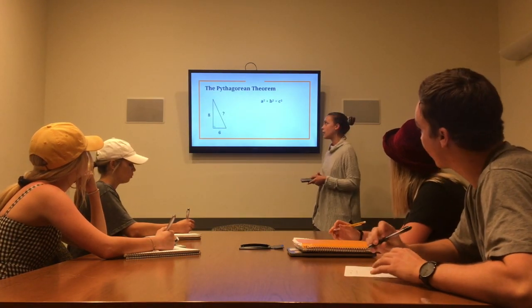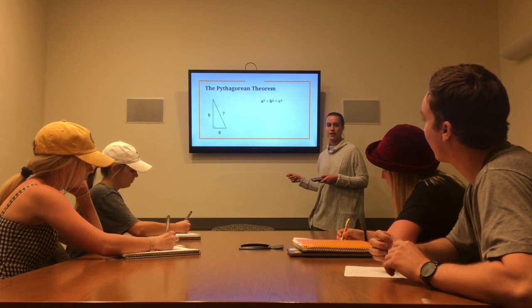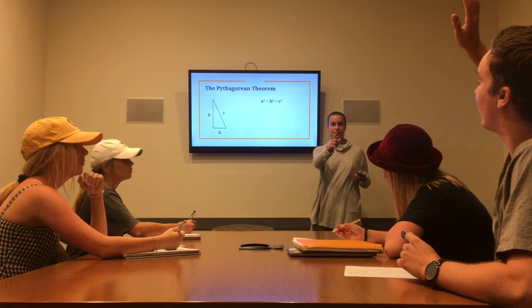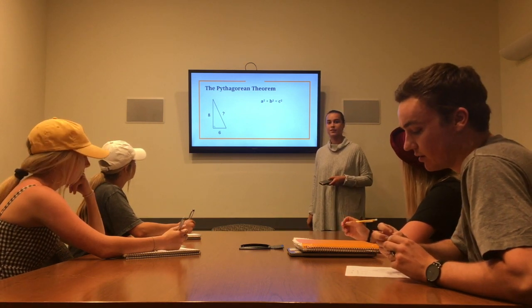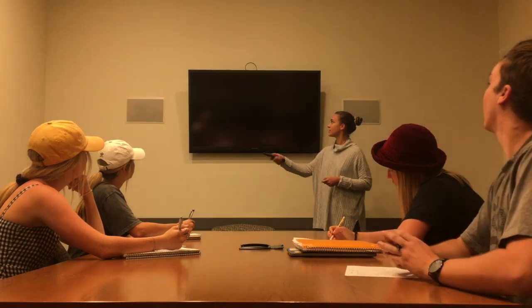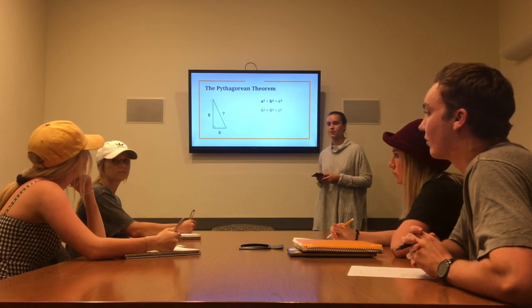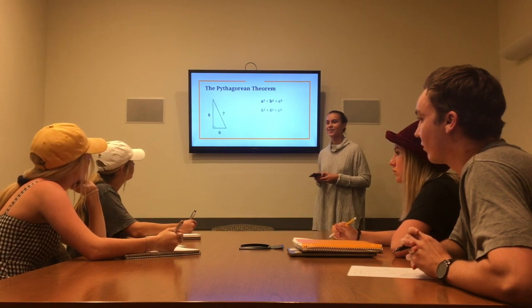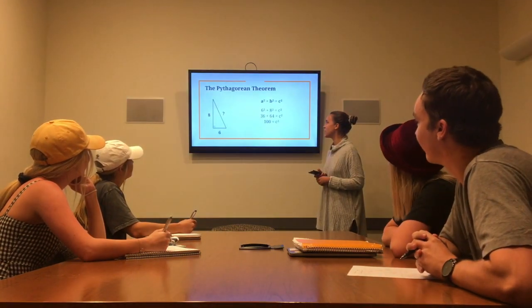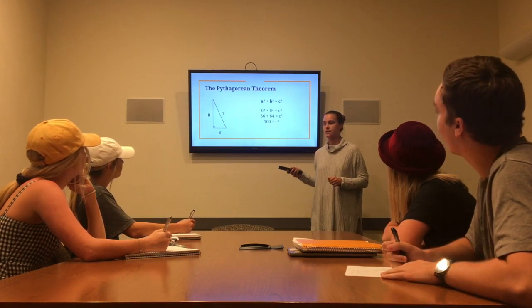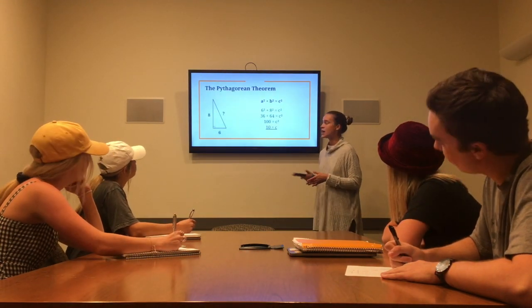Now that we know when to use it, let's learn how to use the Pythagorean theorem. I have a right triangle here with two given sides. The 6 and the 8 represent the legs of the triangle, so they represent A and B — so it would be 6 squared plus 8 squared equals C squared. Then you calculate: 36 plus 64 equals C squared. 36 plus 64 is 100, so 100 equals C squared. To solve for C, you take the square root of 100, and you get 10. So we have solved our first Pythagorean theorem problem.